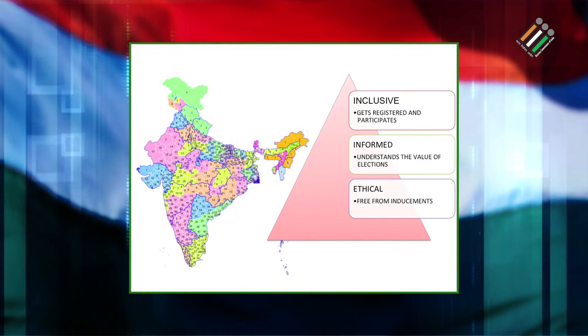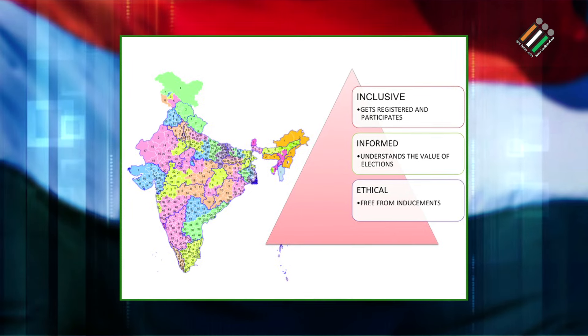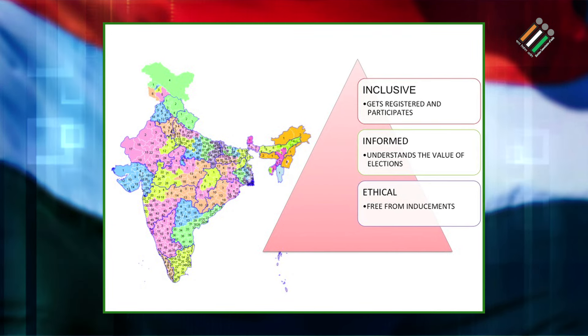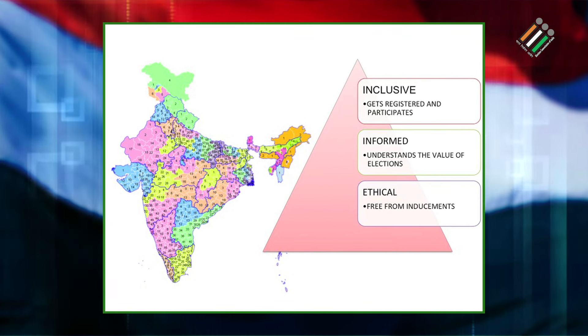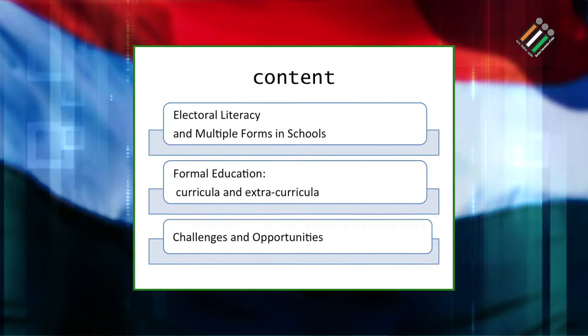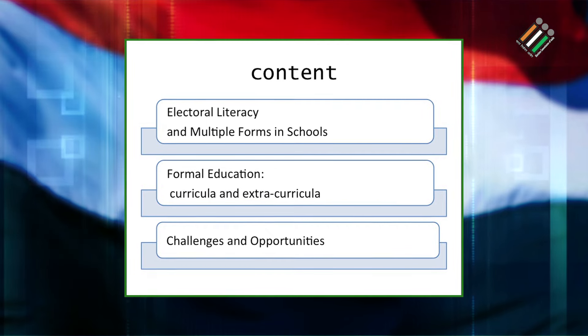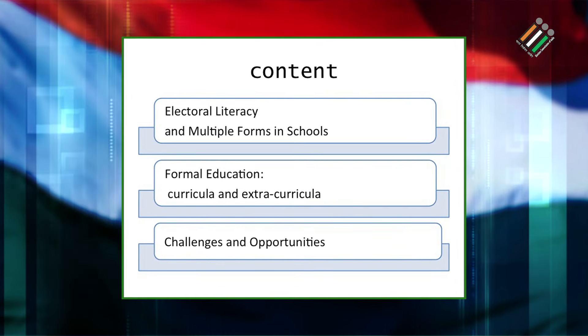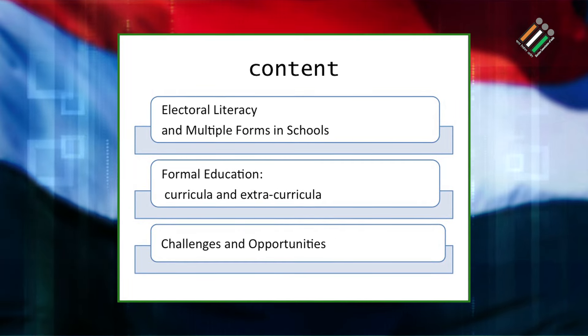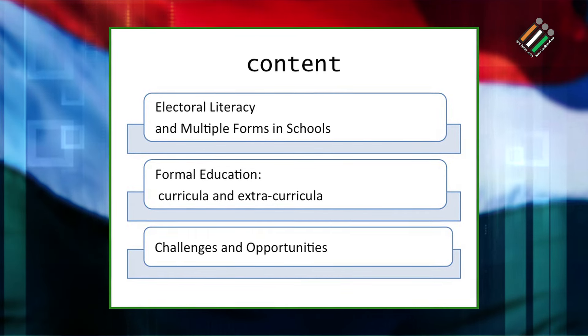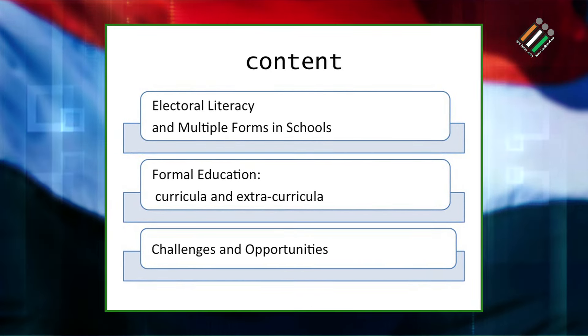First, inclusive — so that everybody gets registered and participates in the process. Second, they are well informed. Third, they remain ethical and free from any kind of inducement. The presentation is structured in three parts: electoral literacy with multiple forms in the school education system; formal education in curricula and extra-curricula; and the challenges, future opportunities, and interventions.